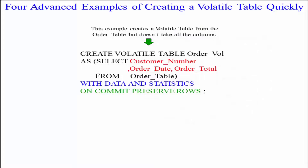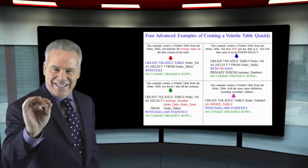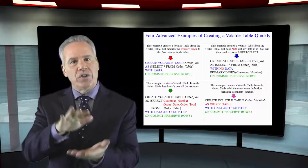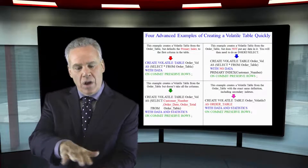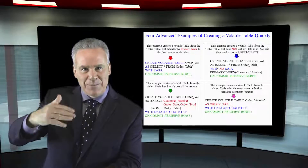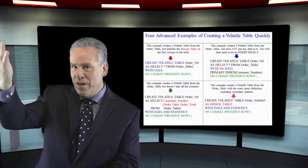In the example with the green arrow, create volatile table, give it a table name — I'm only selecting some of the columns from the original table, and of course I say with data and statistics. It'll bring over the statistics if it makes sense, otherwise it'll zero those out. When I recollect at the table level, it'll collect on the same columns from the original table.